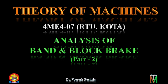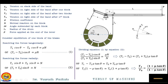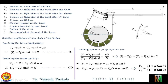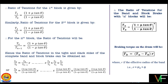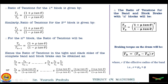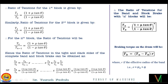We tried to understand why the tensions in the band and block brake are taken as T0 and Tn on the slack side and the tight side respectively. We also saw how the tensions act between the two blocks in the band and block brake with n blocks. We then derived the equations for the ratio of tensions Tn upon T0 and also for the breaking torque in case of band and block brake. We further discussed that the force P applied at the end of the lever can be found by considering the free body diagram of the lever and taking the moments of the forces acting on the lever about the fulcrum.